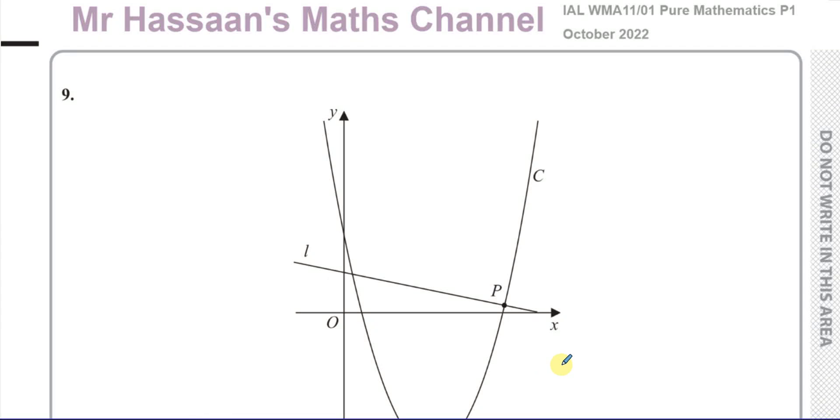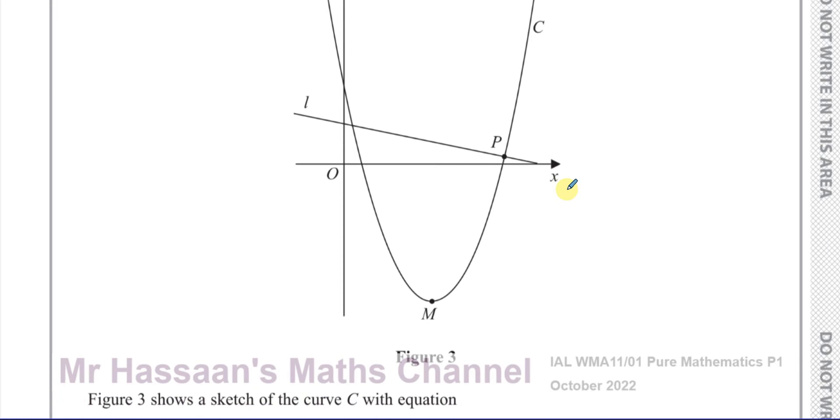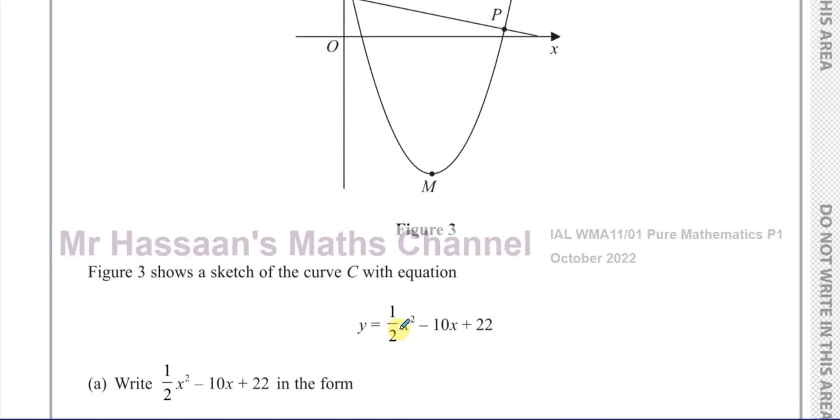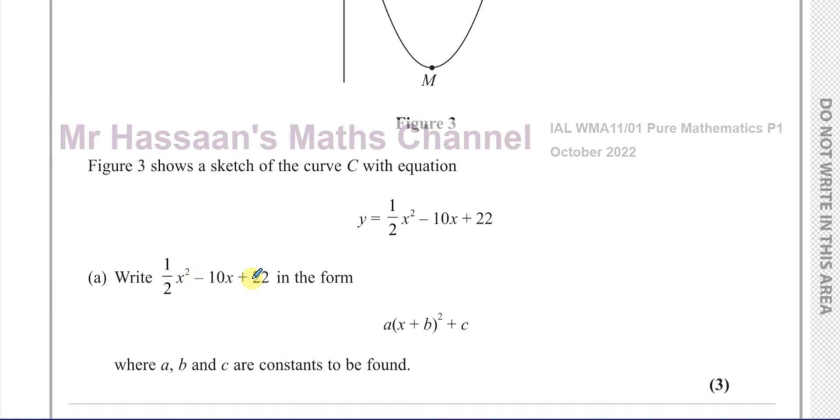Okay, welcome back. This is Mr. Hassan's Maths Channel. I'm now answering question number 9 from the October 2022 Pure Mathematics P1 International A-Level Edexcel paper. This question is the last question on this paper. And this question here starts off with this sketch which shows the curve C with the equation y equals 1 half x squared minus 10x plus 22.